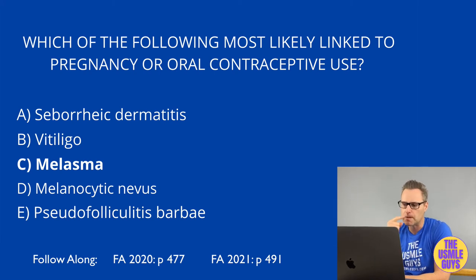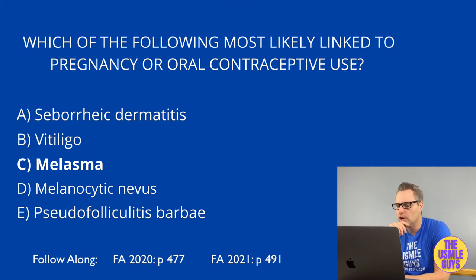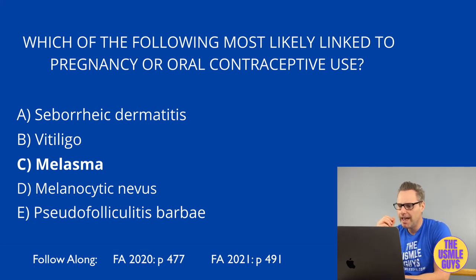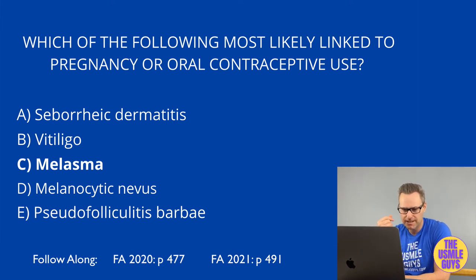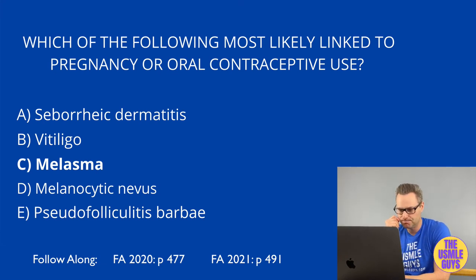Seborrheic dermatitis is characterized by erythematous, well-demarcated plaques with greasy yellowish scales, found wherever there's an abundance of sebaceous glands — think scalp and face. Interestingly, this is associated with Parkinson's disease, and it can be managed with topical antifungals as well as corticosteroids.